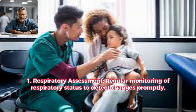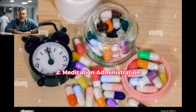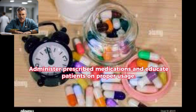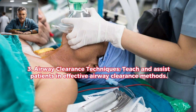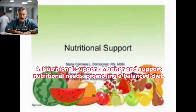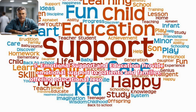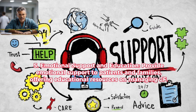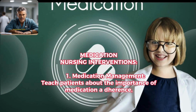Nursing interventions: 1. Respiratory assessment — regular monitoring of respiratory status to detect changes promptly. 2. Medication administration — administer prescribed medications and educate patients on proper usage. 3. Airway clearance techniques — teach and assist patients in effective airway clearance methods. 4. Nutritional support — monitor and support nutritional needs, promoting a balanced diet. 5. Emotional support and education — provide emotional support to patients and families, offering educational resources on managing CF.